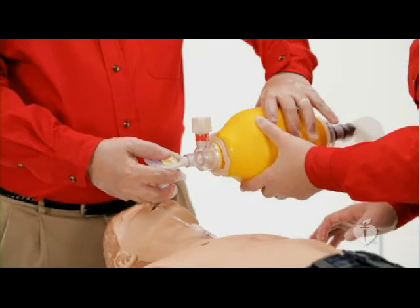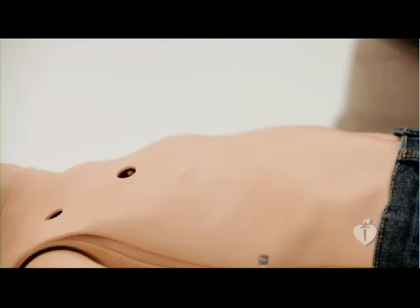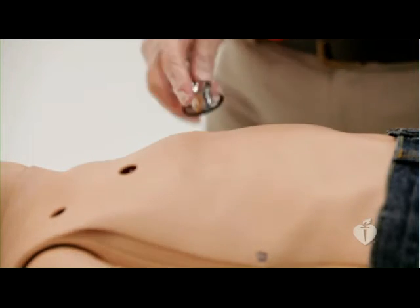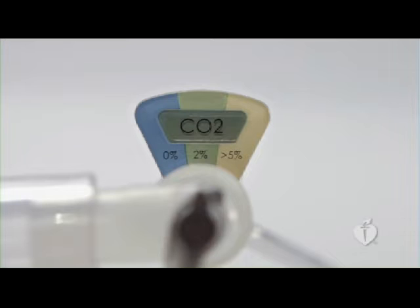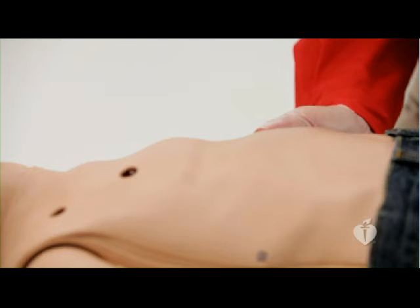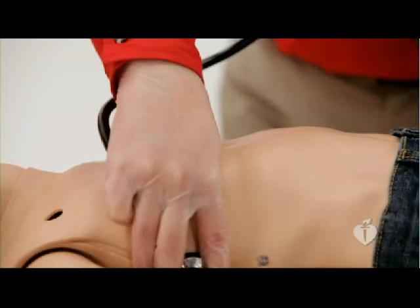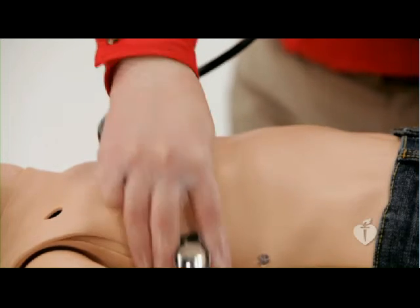After insertion, just as with an endotracheal tube, verify tube placement with clinical examination and an exhaled carbon dioxide detector. If the child has a perfusing rhythm, you should detect exhaled carbon dioxide. Observe for chest rise and listen for breath sounds over both lung fields. When ventilating through the laryngeal mask airway, you'll notice some resistance — this represents the resistance to airflow through the airways into the lungs.